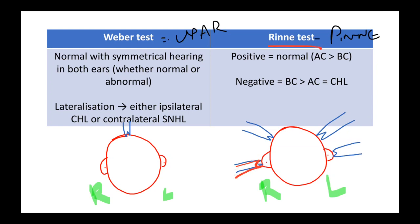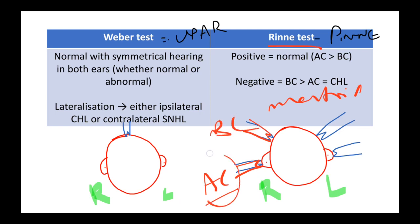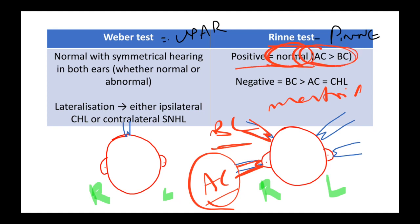We place the tuning fork first across the ear and ask if the patient is able to hear it — that is air conduction (AC). Then we place the tuning fork over the mastoid bone — that is bone conduction (BC). If the patient hears air conduction better than bone conduction, that is normal, since the sound is right across the ear. So if AC is greater than BC, the patient's hearing is absolutely normal.